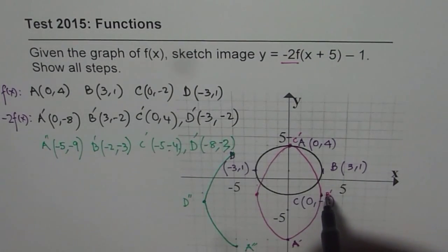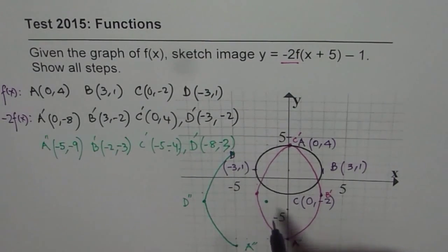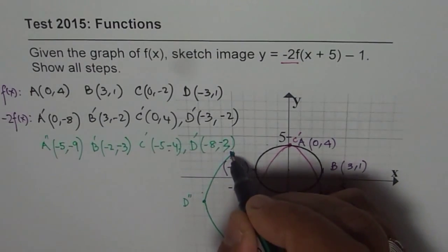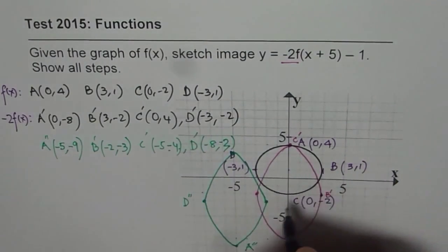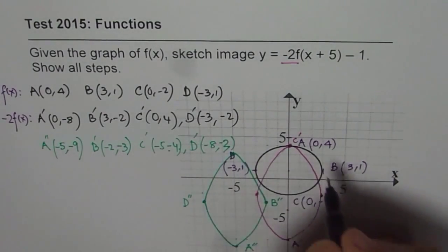Now the last point is B dash. 1, 2, 3, 4, 5, and 1 unit down. So that is how it should be. We'll connect these points. Let me write B double dash.